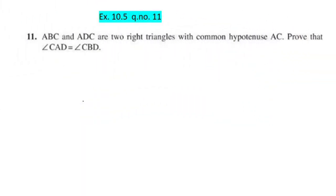Welcome to this video. We are going to do exercise 10.5, question number 11. Triangle ABC and triangle ADC are two right triangles with common hypotenuse AC. AC is the hypotenuse.